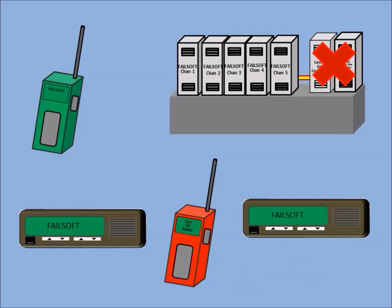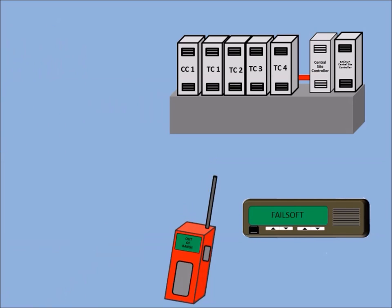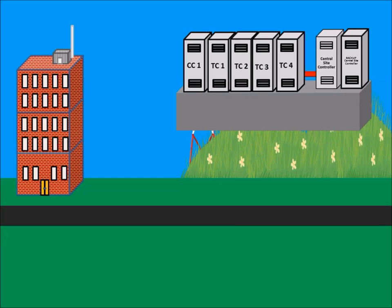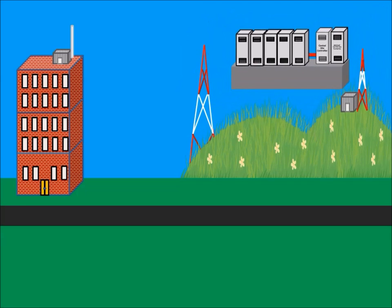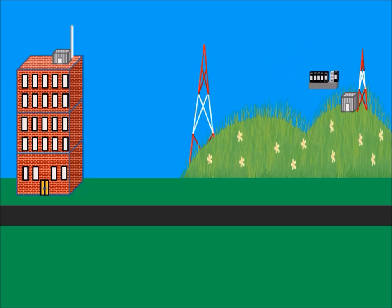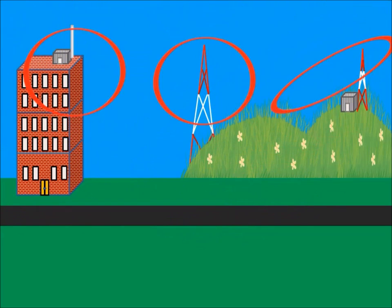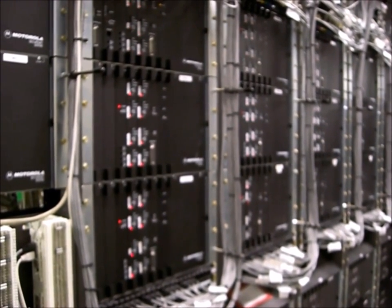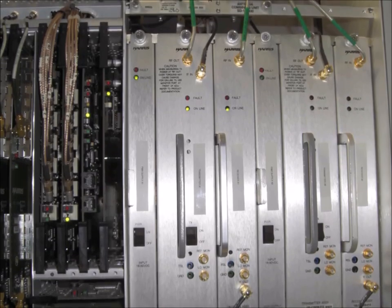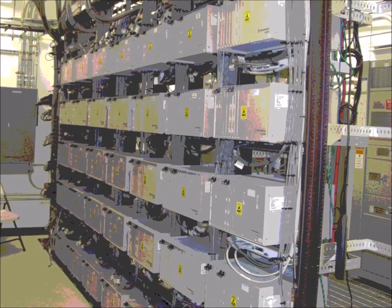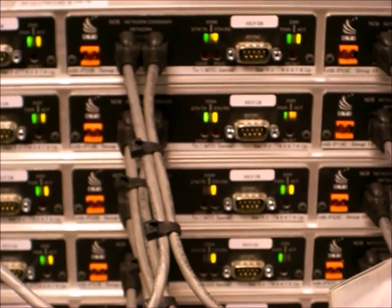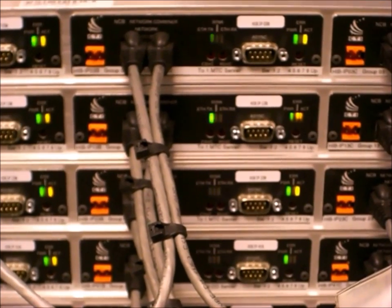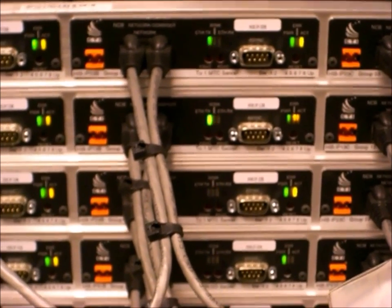Trunked systems can operate in a simulcast configuration. Like conventional simulcast, this allows for frequency reuse over a larger geographical area. System designs usually incorporate multiple levels of controller redundancy at a central level controlling all sites, and at the individual site level. If you are operating a trunked simulcast public safety grade system, you most likely have redundancy at a centralized location as well as at each site. Check with your system maintainer to verify.